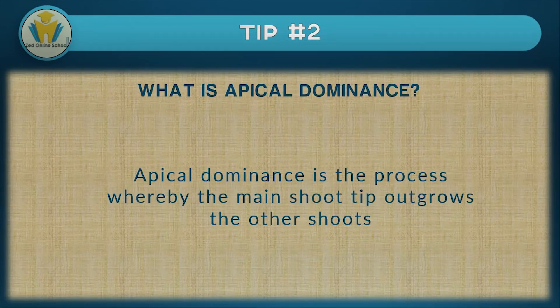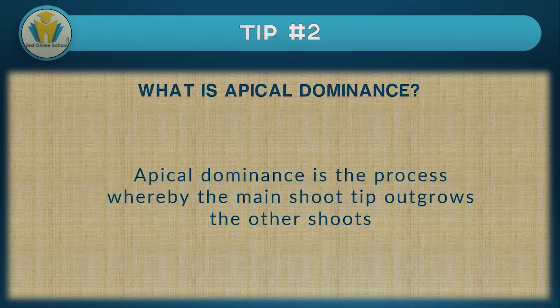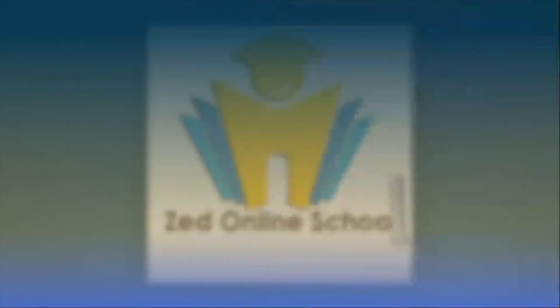The second bonus tip is apical dominance — something very important. Apical dominance is the process whereby the main shoot tip outgrows the other shoots. What this simply means is that the main shoot of a plant will usually outgrow the other shoots of that plant. The scientific term for this process or characteristic is apical dominance. Thanks for watching till the end — now it's your job to look around your environment to see if you can spot anything we talked about in this video.